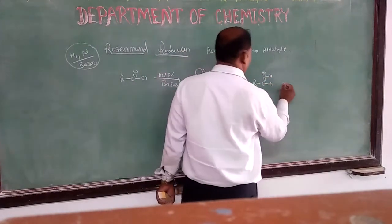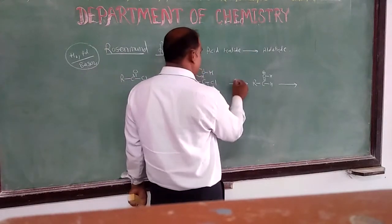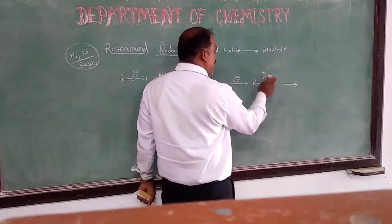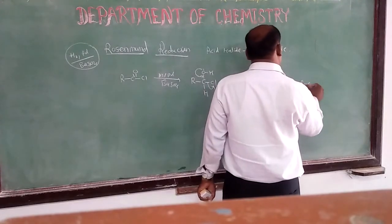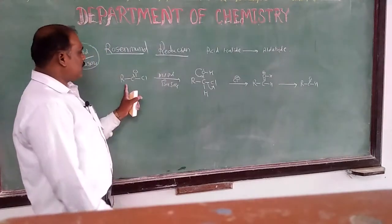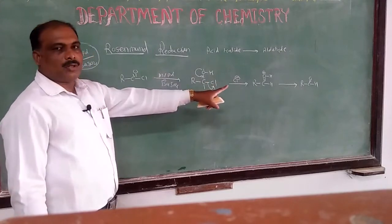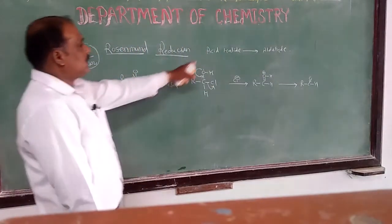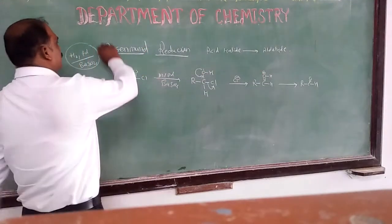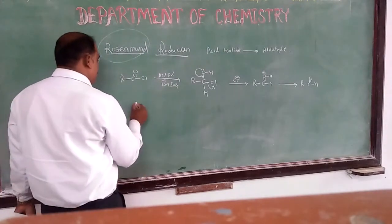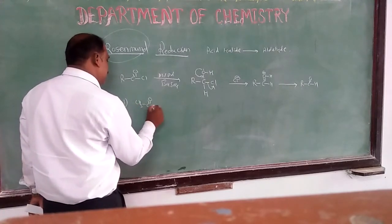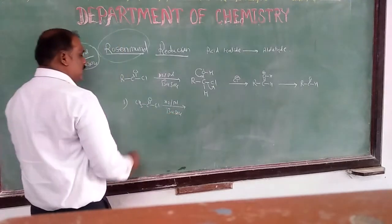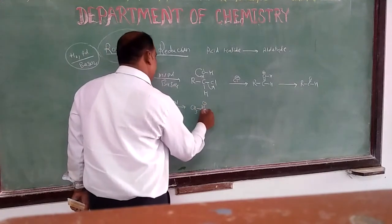Cl⁻ picks up the proton and neutralizes the charge, giving the product R-CHO (aldehyde). This confirms the conversion of acid halide to aldehyde. For example, CH₃COCl treated with H₂/Pd on BaSO₄ gives CH₃CHO (acetaldehyde). Chlorine is replaced by hydrogen. Similarly, other acid chlorides undergo Rosenmund reduction with Cl replaced by H to give the corresponding aldehydes.